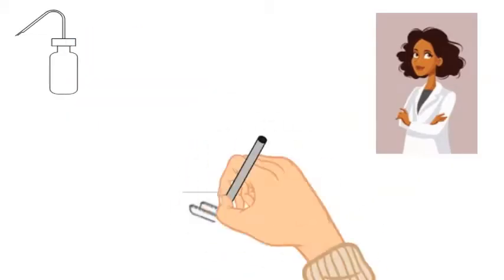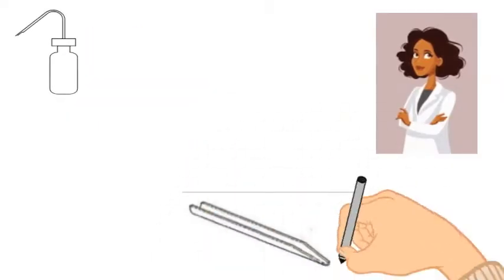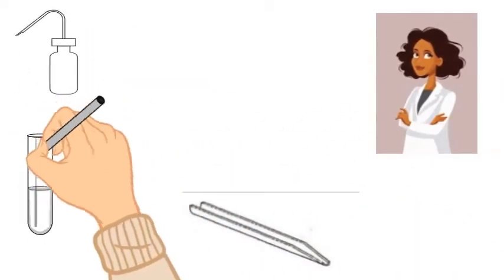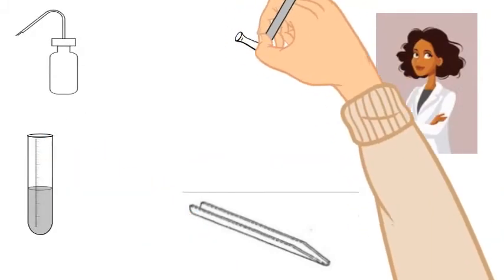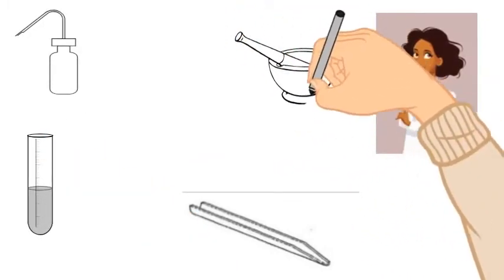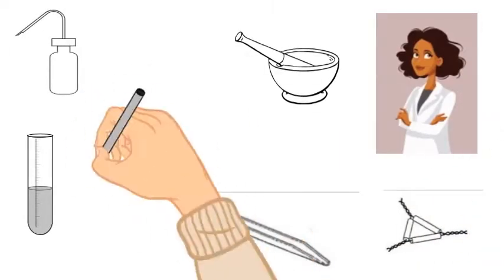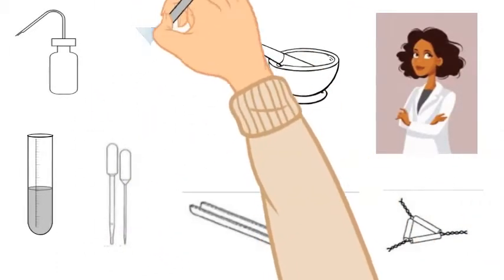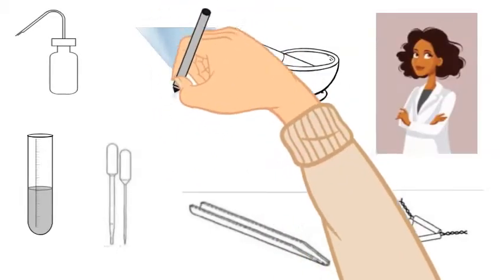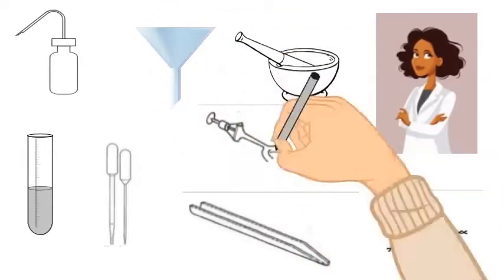Some other equipment which we will be using is the wash bottle which we will fill with distilled water, the spatula or scoopula to handle chemicals, the test tube, the mortar and pestle to grind chemicals, the clay triangle so that we can heat or hold a funnel, the transfer pipettes, and lastly the funnel and the ring which goes on the ring stand.